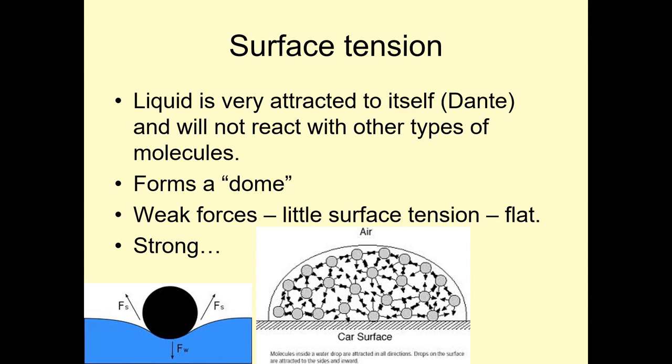Surface tension. Liquid is very attracted to itself. Like Dante. So Dante is very attracted to himself. He just hangs out with himself all the time. He thinks he's so awesome, so amazing. And will not react to those types of molecules. This happens most often with H bonding. So again, strong forces would emphasize this. It forms a dome. See how this particle is attracted here and here and here and here. So it's less likely to fall down. Weak forces have little surface tension. So if there were no attractions on this guy right here, if this guy had no attractions at all, you see how he would kind of fall and gravity would just kind of have him end up over here.